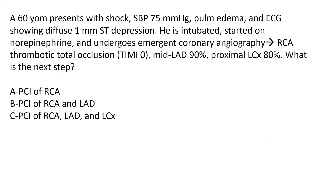Next case: a 60-year-old man presents with shock — blood pressure 75, pulmonary edema, and EKG showing diffuse one millimeter ST depression. He's intubated, started on norepinephrine, and undergoes emergent coronary angiography showing thrombotic total occlusion of the RCA, mid-LAD 90%, and proximal circumflex 80%. What is the next step? PCI of RCA only, PCI of RCA and LAD, or PCI of all three?